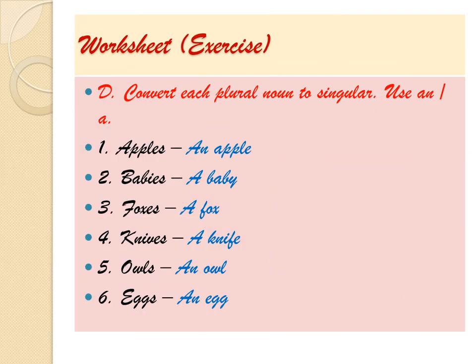Question four: convert each plural noun into singular and use A or AN. Plural forms are given on the left-hand side and we change them to singular by adding A or AN. Apples → an apple, babies → a baby, foxes → a fox, knives → a knife, owls → an owl, eggs → an egg.